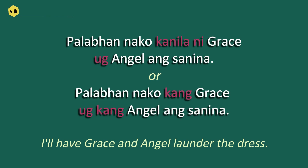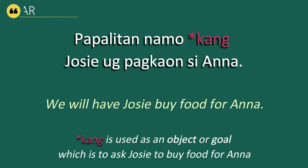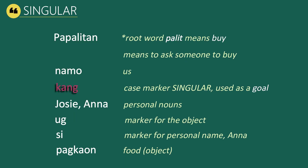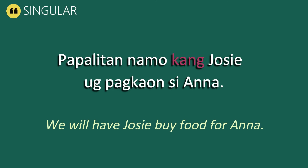Now let's look at our last example: Papalitan namo kang Josie og pagkaon si Anna, which means 'We will have Josie buy food for Anna.' Papalitan comes from the root word palit meaning 'buy,' in future tense. Namo means 'us,' kang is the subject marker in singular, Josie is the person's name, og is a marker for an object, pagkaon means food, si is the marker for the personal name, and Anna is a person's name.